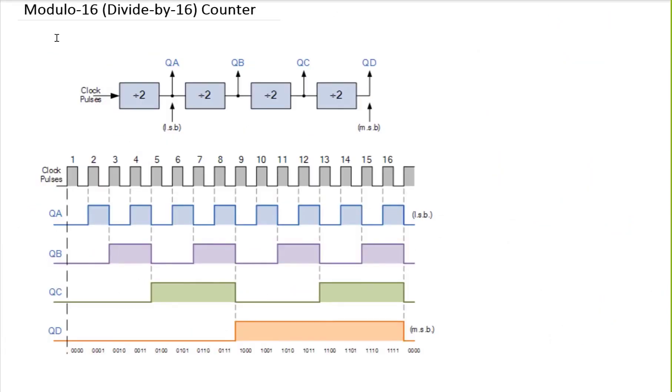So let's look at modulo-16 or divide-by-16 counter. In this case, we will be extending the same idea. One flip-flop will give me divide-by-2. If I cascade it by another one, then I will get divide-by-4. And if I use three flip-flops, I can get divide-by-8. And if I use four flip-flops, then I can get divide-by-16 counter. At every stage, I am dividing my frequency by 2. If you look at this, this is 0, 0, 0, 0 for the first cycle.